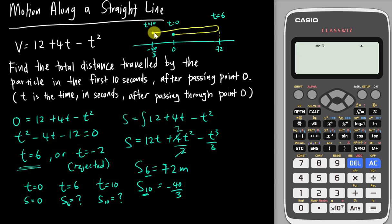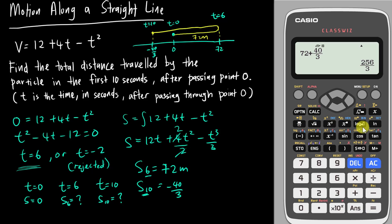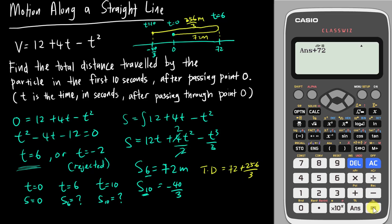The first part of the journey from 0 to 72 is 72 meters. The second part, from 72 back to negative 40 over 3, is 72 plus 40 over 3, which equals 256 over 3. So the total distance is 72 plus 256 over 3, giving approximately 157.33 meters.